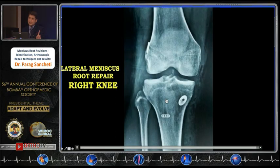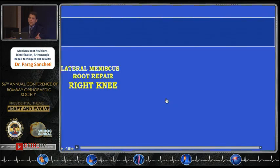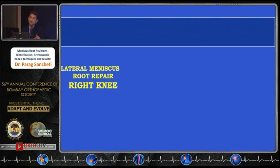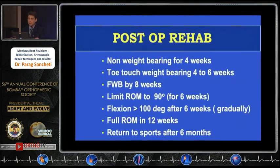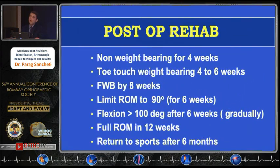The operative sequence is very important: first do the tunnels for the ACL, then do the repair — the tibial tunnel pull-out sutures — and repair the complete lateral or medial meniscus root, then pass your ACL graft and fix it. This is the correct sequence for a lateral or medial meniscus root repair combined with an ACL reconstruction.